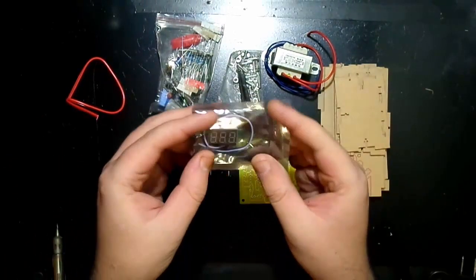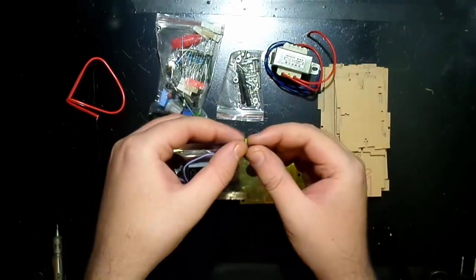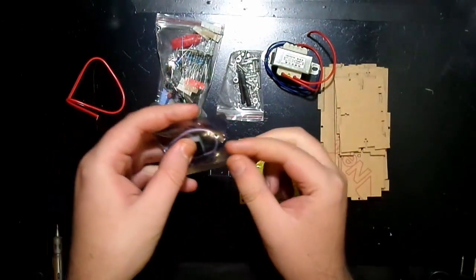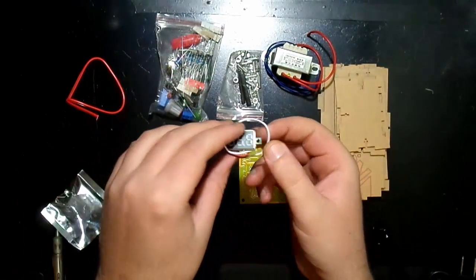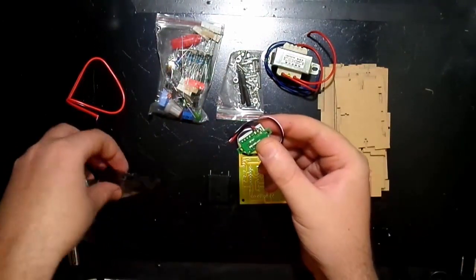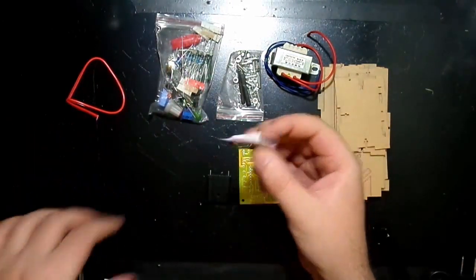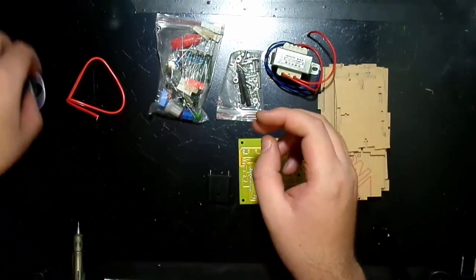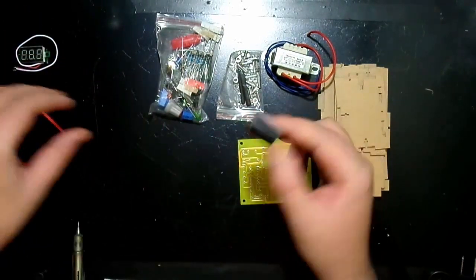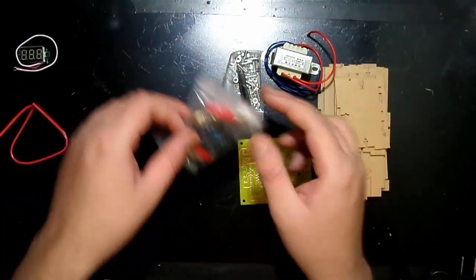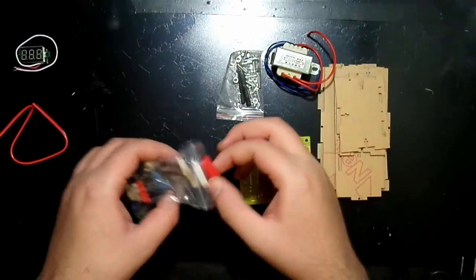Okay, so first we have this voltage meter. Let me open up the package. Pretty basic voltmeter. We've got some wire and heat sink. Let's see what's inside here.